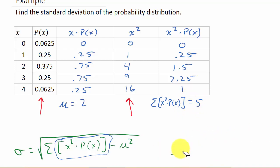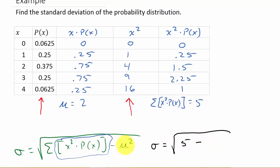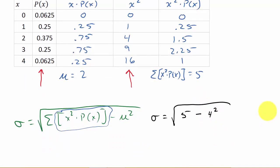Now I'm ready to plug everything into the formula. The standard deviation equals the square root of: the sum of x squared times P(x), which is 5, minus mu squared, which is 2 squared = 4. So the standard deviation is the square root of (5 minus 4) = the square root of 1, which is 1.